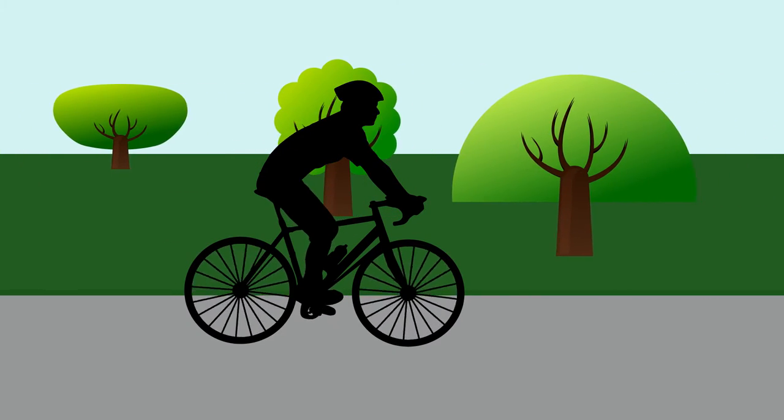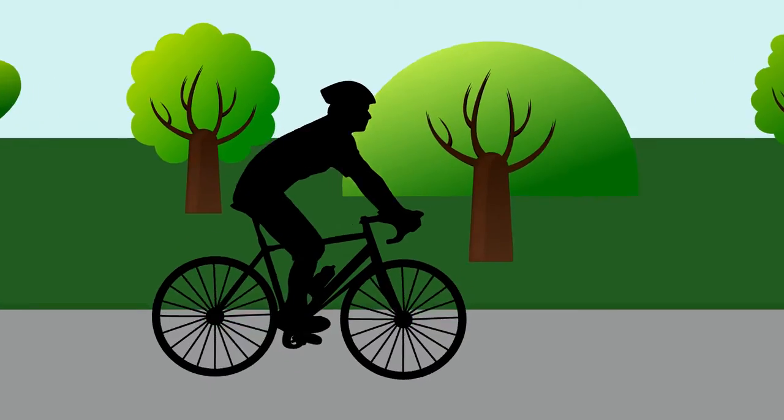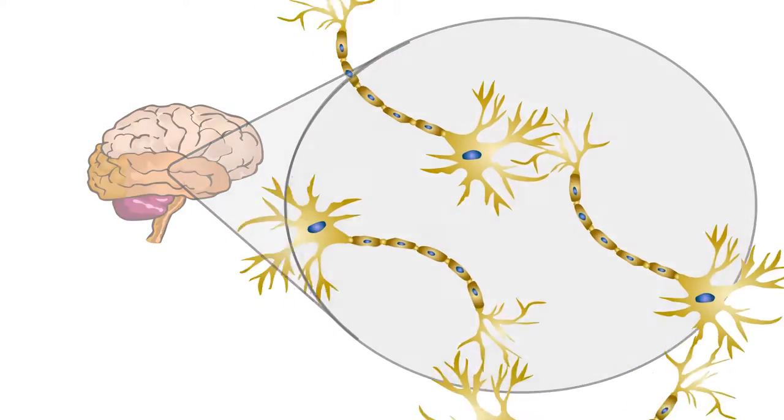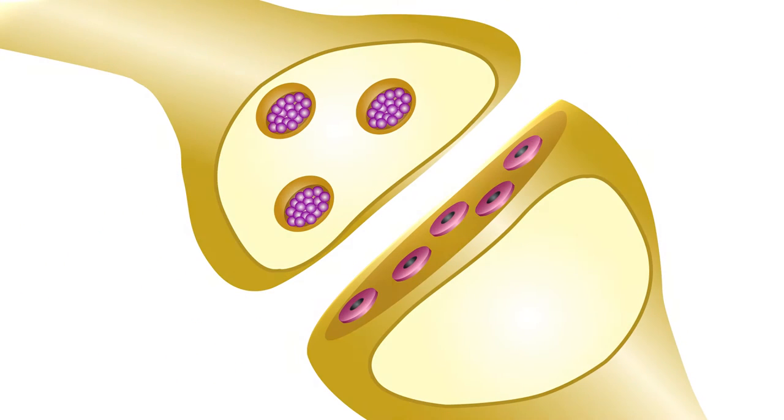Every brain function, from consciousness to motor control, depends on communication between brain cells called neurons. The vast majority of this communication occurs through specialized point-to-point contacts called synapses, which consist of a pre- and a postsynaptic compartment.